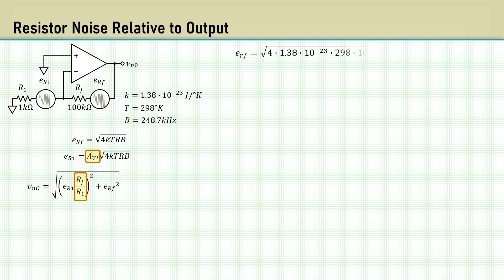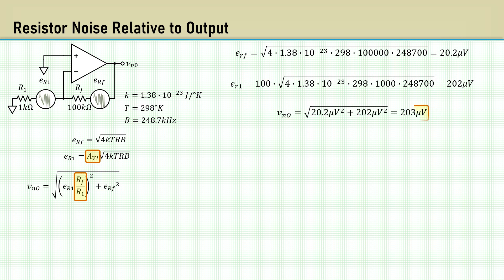For RF, we get 20.2 microvolts. For R1, we get 202 microvolts. The RSS result is 203 microvolts. Once again, this is relative to the output.